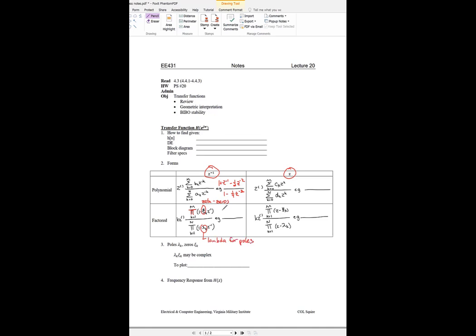As an example of that, maybe we've got a one minus one half z to the negative one in the numerator. And we might have one minus one quarter z to the negative one times one plus three quarters z to the negative one. And it's factored. You can quickly determine what your zeros and your poles are from this type.